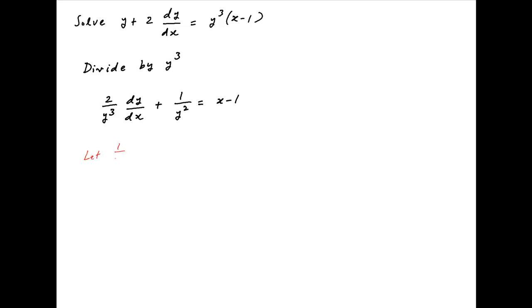Now let 1 upon y² be equal to z. Taking the derivative of both sides with respect to x, we get minus 2 upon y³ times dy upon dx is equal to dz upon dx.